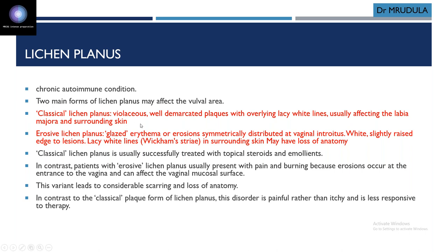Vaginal involvement distinguishes lichen planus. When vaginal involvement is not there, it is usually lichen sclerosis. For erosive lichen planus, the keywords are: glazed erythema, symmetrical distribution at vaginal introitus, Wickham's striae — white slightly raised edges to the lesion — and loss of anatomy.